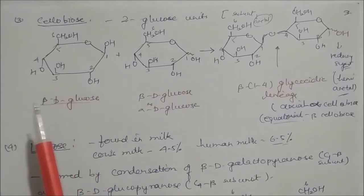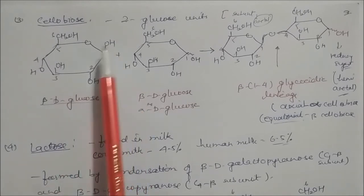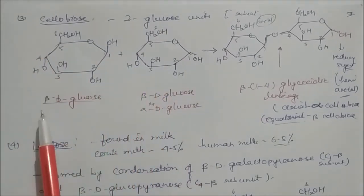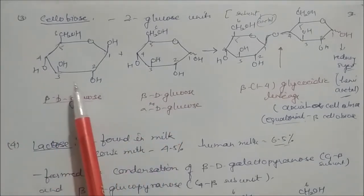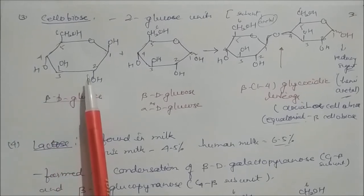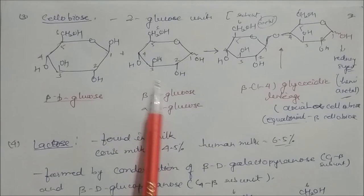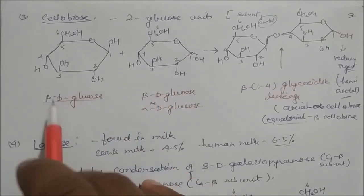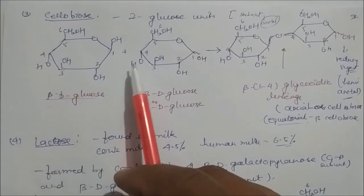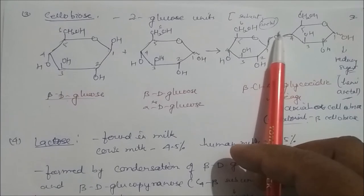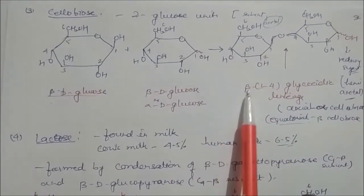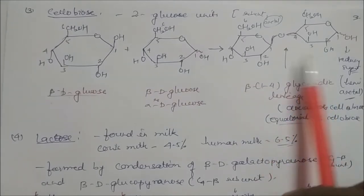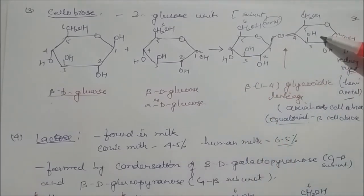Cellobiose is the third disaccharide discussed. Like maltose, it has two glucose units, but here both are beta-D-glucose. The difference from maltose: maltose uses alpha-D at the glycosidic end, but cellobiose uses beta-D. The OH is in the up position. The linkage is beta-1,4-glycosidic, compared to alpha-1,4 in maltose. The acetal subunit uses beta-D glucose and the hemiacetal subunit is free.